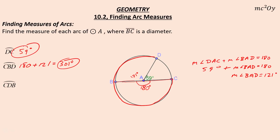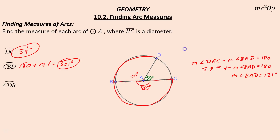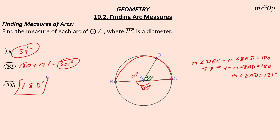And then arc CDB — going from C to D to B — notice that's a semicircle, so that's 180 degrees.